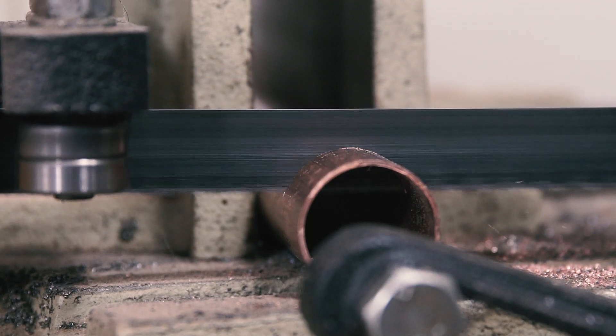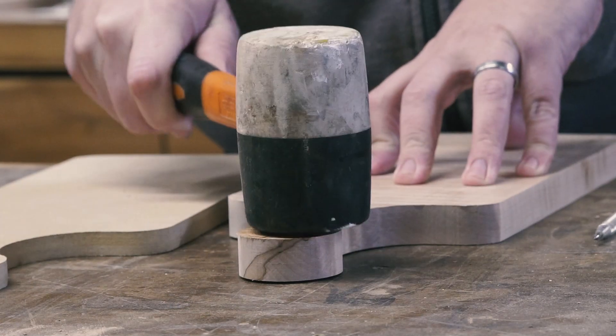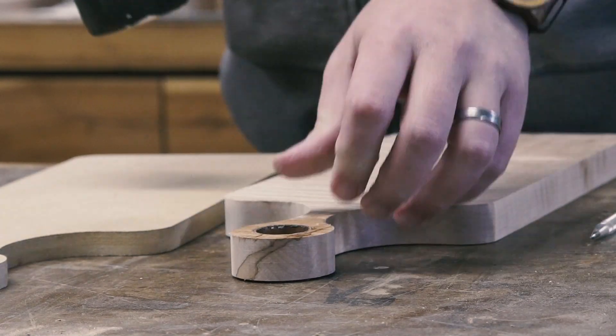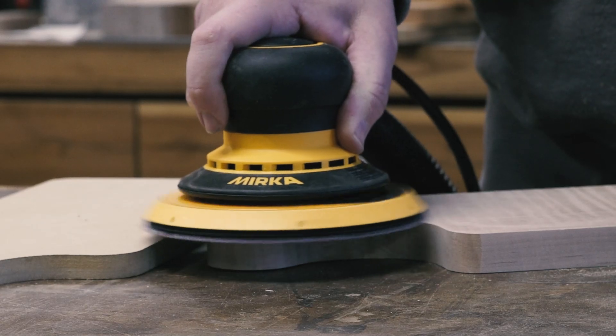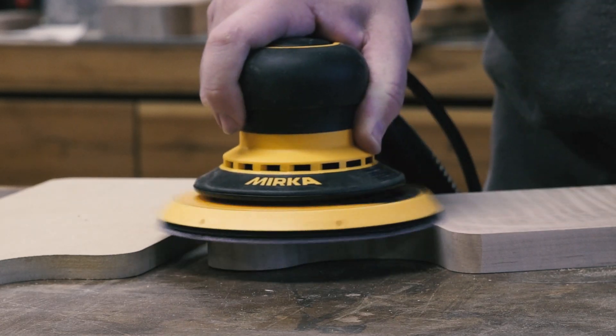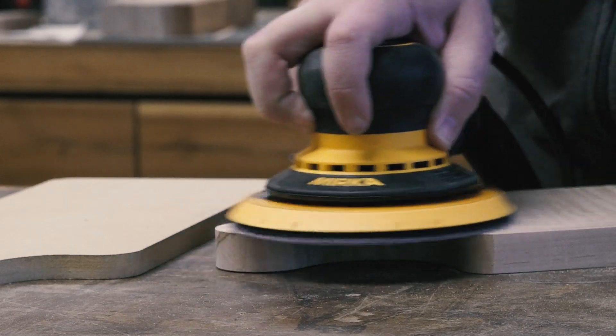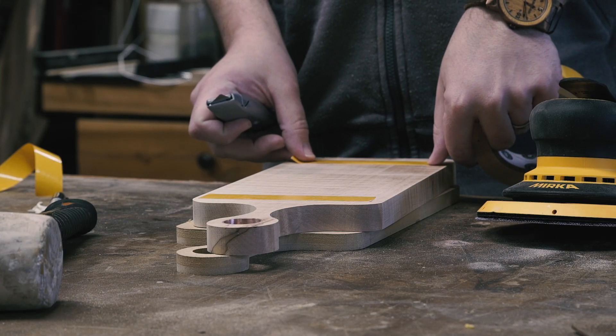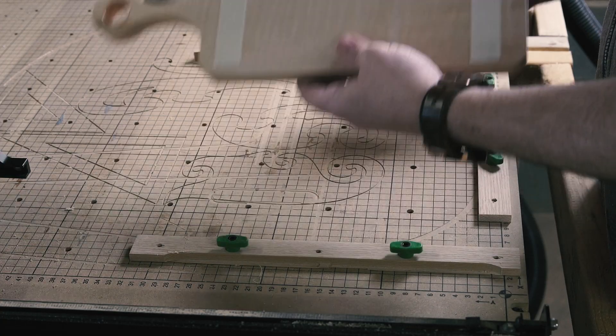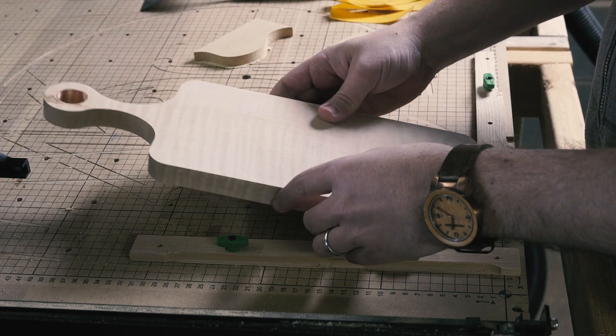My camera decided to stop recording right as I was about to install the copper, so you'll have to forgive this dramatic recreation. With the shape of the board basically done, I sanded it to 220 grit and made sure the copper insert was absolutely flush so there was no danger of scratching whatever table it would sit on. It was time to brand the board.